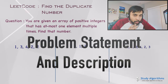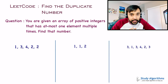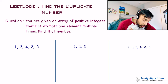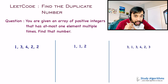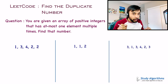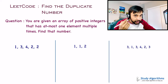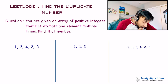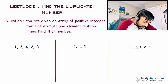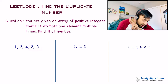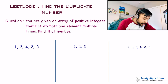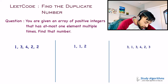Let us make sure we are understanding the problem statement correctly. You are given an array of positive integers that has at most one element appearing multiple times. It means that all of the elements will be unique, but there will be only one element that could be duplicated multiple number of times. You need to find out that number. In test case number 1, you can see that the number 2 is repeated 2 times while all the other digits are unique. So in our first test case, 2 should be your answer.